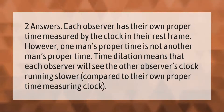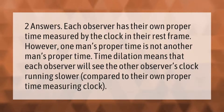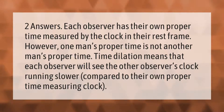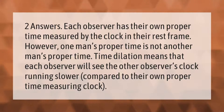Each observer has their own proper time, measured by the clock in their rest frame. However, one man's proper time is not another man's proper time. Time dilation means that each observer will see the other observer's clock running slower compared to their own proper time measuring clock.